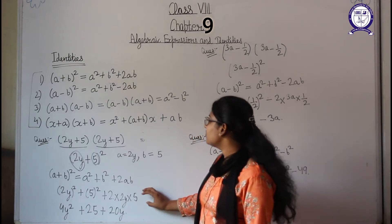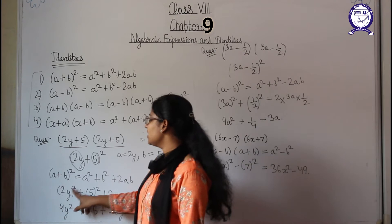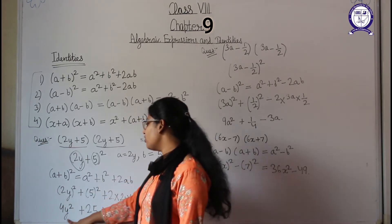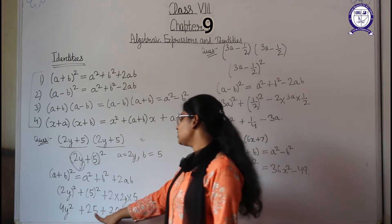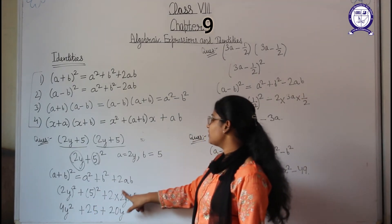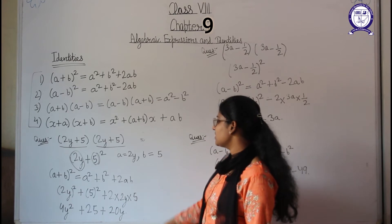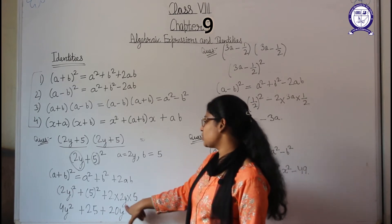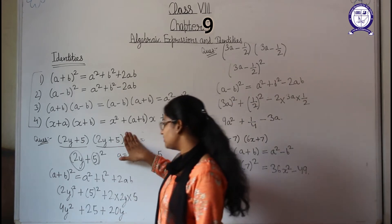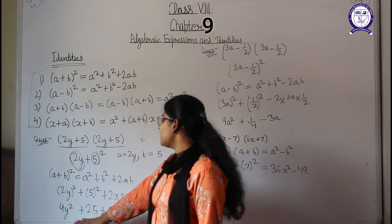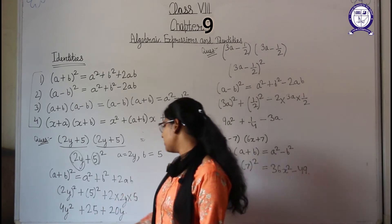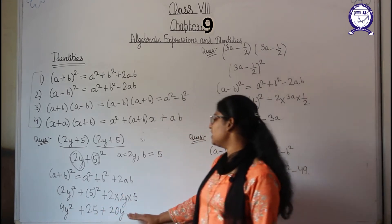Now we solve: (2y)² = 4y², 5² = 25, and 2 × 2y × 5 = 20y. So the answer is 4y² + 25 + 20y.